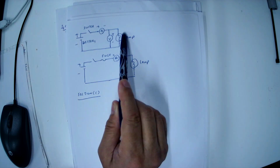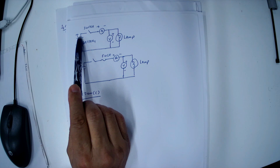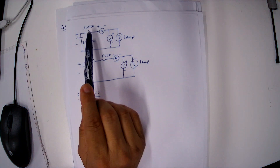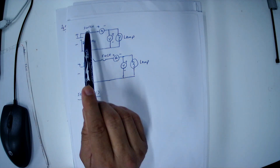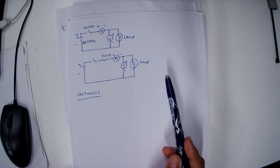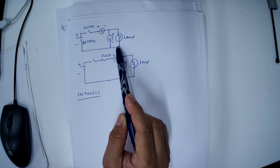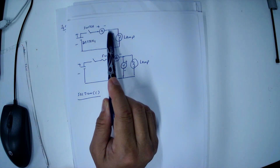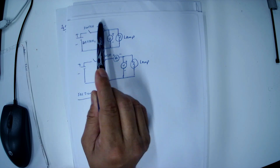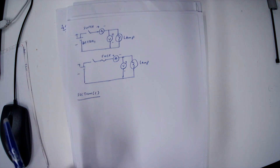So this is the circuit. The electrical current coming from the battery, passing through the switch, passing through the ammeter, then goes to the lamp, with the voltmeter connected across the lamp. So this is the circuit diagram for this question.